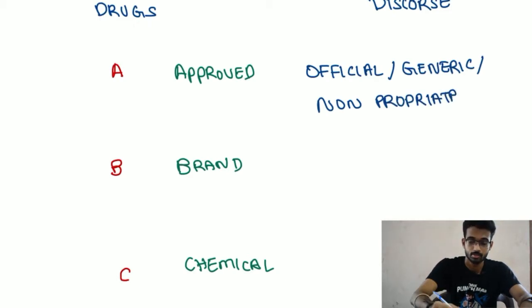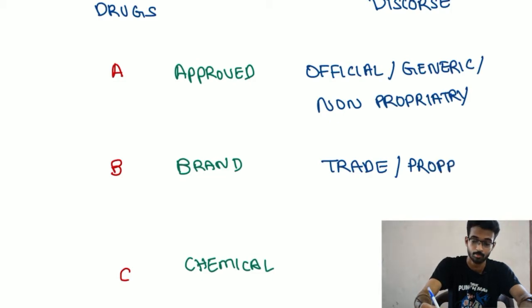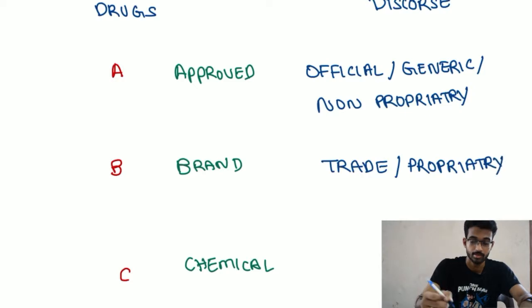B is called as brand name. It is also called as trade name. It is also called as proprietary name. C is called as chemical name.